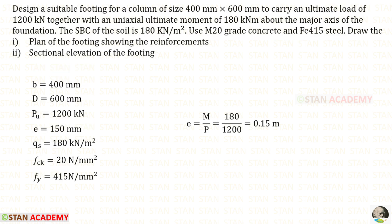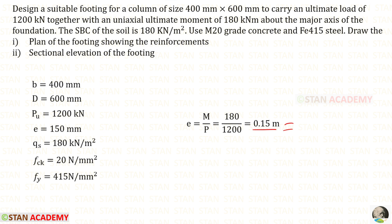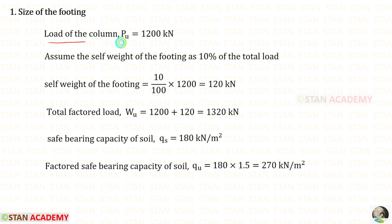The same question can be asked in a different way. In this question, the ultimate load is given and the ultimate moment is given. Using both of them we can find the eccentricity — that is the moment upon the load — so we get 0.15 m, which is 150 mm. The ultimate load PU is 1200 kN. Assuming self-weight of the footing as 10% of the total load gives 120 kN, so the total factored load W is 1320 kN.